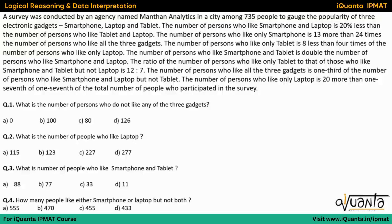Hello everyone. Let's look into a very good set based upon Venn diagrams. A survey was conducted by an agency named Manthan Analytics in a city among 735 people to gauge the popularity of three electronic gadgets: smartphone, laptop, and tablet.